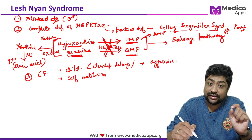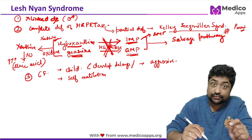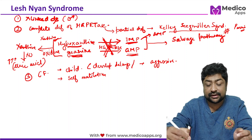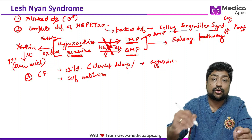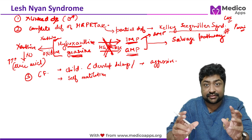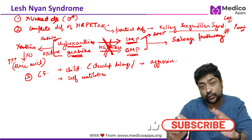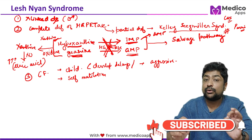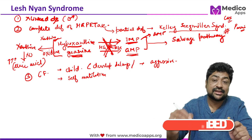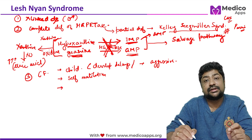In Kelley-Seegmiller syndrome, by contrast, these neurological symptoms are absent. With only partial HGPRT deficiency, uric acid is elevated (hyperuricemia) and there may be some developmental delay, but CNS symptoms do not appear. So CNS features are only seen with complete deficiency in Lesch-Nyhan syndrome.